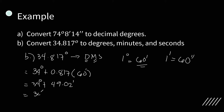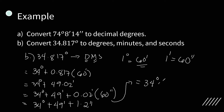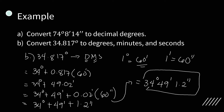So we have now 34 degrees plus 49 minutes plus 0.02 minutes to seconds, multiply by 60 seconds. So 0.02 times 60 is 1.2 seconds. Therefore, 34.817 degrees is equal to 34 degrees, 49 minutes, and 1.2 seconds.